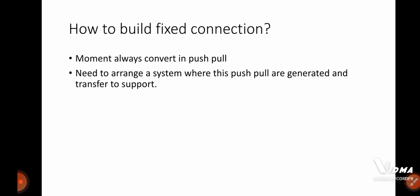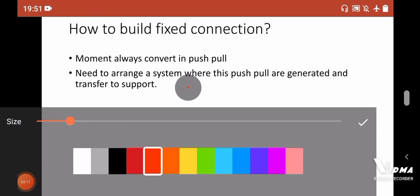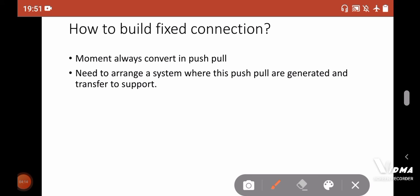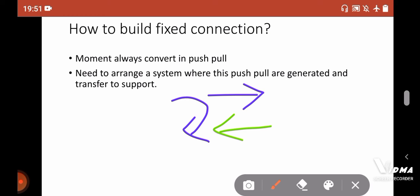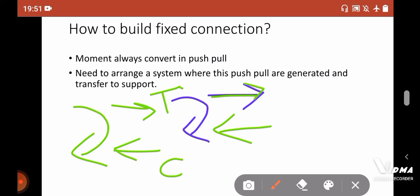The second question is how to build your fixed connection. Before discussing that, consider a basic concept: whenever there is a moment, we can say there is a pull on one side and a push on the other — tension and compression. So if you provide some material that can cater to this tension as well as this compression, you have built the fixed connection.